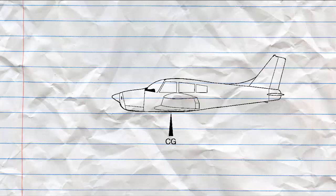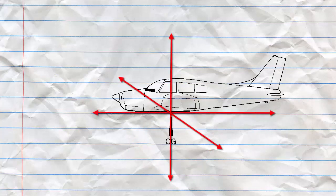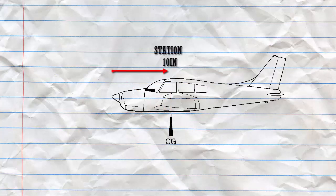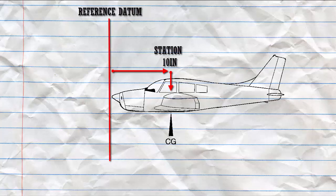As pilots, we should be familiar with terms used in working problems related to weight and balance. The first term is going to be standard empty weight. That's the weight of the airframe, engines, and all the items with fixed locations, and it includes unusable fuel and operating liquids such as oil. The basic empty weight: the standard empty weight plus the weight of optional and special equipment. The center of gravity, or CG: the point about which an aircraft would balance if it were possible to suspend it at that point. This is also the point in the aircraft through which all forces act. Station: a location along the airplane fuselage usually given in terms of distance from the reference datum. Datum: an imaginary vertical plane or line from which all measurements of arm are taken. Arm: the horizontal distance in inches from the reference datum line.